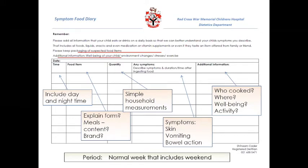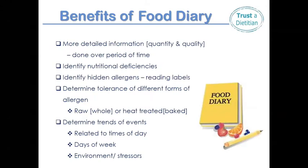The diary should ideally be done during a normal week including weekends — roughly seven consecutive days. The benefits include identifying nutritional deficiencies by knowing quantity, quality, and time periods. Very importantly, it helps identify hidden allergens that families never suspected, different food forms such as raw versus baked, and trends on events — what time of day or day of the week reactions occur, and whether environmental stressors contributed.